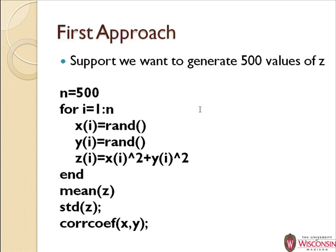A loop might look like this. This loop generates 500 values of x, 500 values of y, and then combines those to form 500 values of z. I use a for loop to run through 500 times. Then I calculate the mean of z, the standard deviation of z, and the correlation coefficient between x and y.